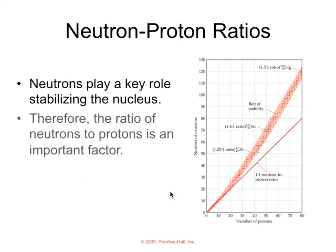Neutrons, with their neutral charge, they play a key role in stabilizing the nucleus. You can think of them as a buffer for the protons that are within that nucleus. When we're looking at radioactive atoms, or radionuclides, it's the ratio of neutrons to protons that we'll find is an important factor.